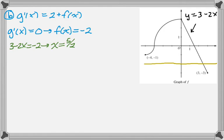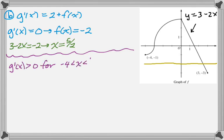Now there's only one critical point, so if I can show that the derivative changes from positive to negative at that point, then the function must have an absolute max there. So I'm actually going to do that. So g prime of x is definitely greater than 0 in between negative 4 and 5 halves. And you can see that on the graph because if you look, f is greater than negative 2. So as long as f is greater than negative 2 and g prime is 2 plus f of x, then g prime will be greater than 0.